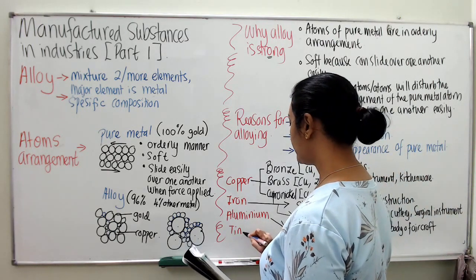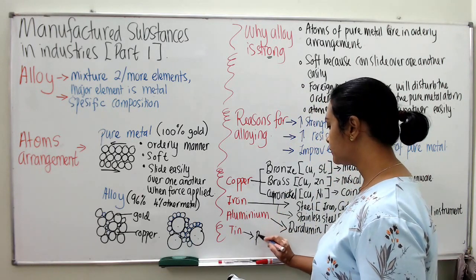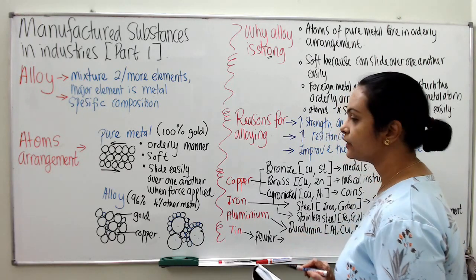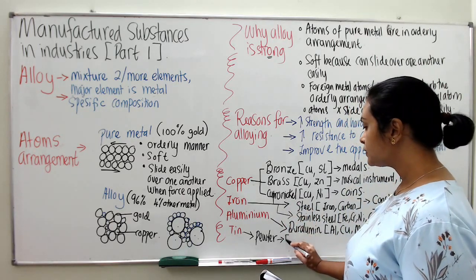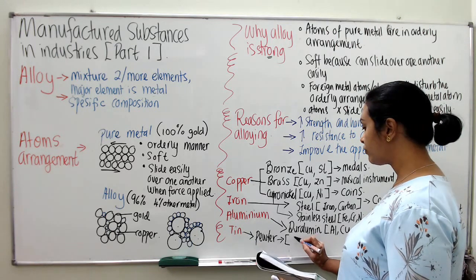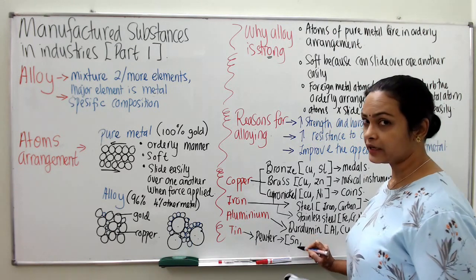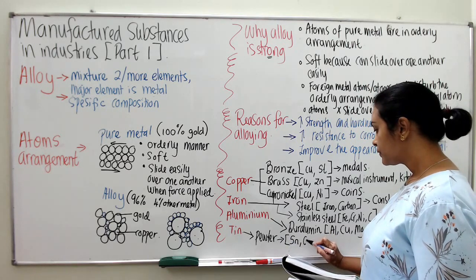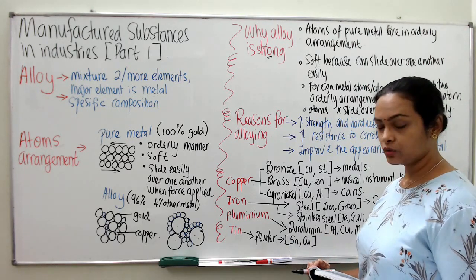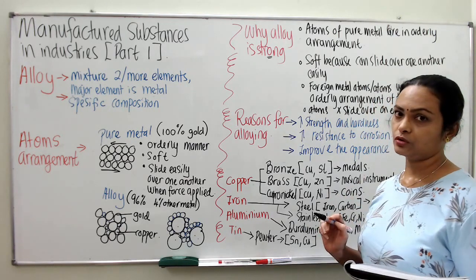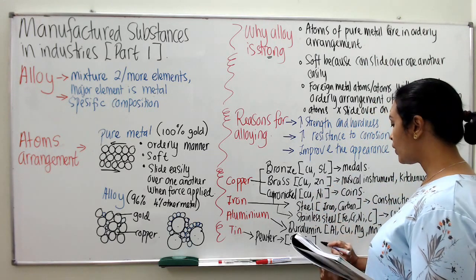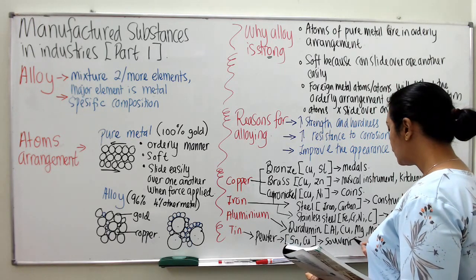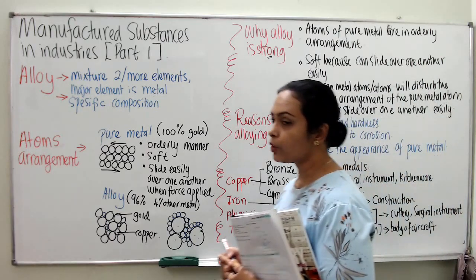Let's go to tin. Tin has one major alloy you should know, which is pewter. Pewter is lustrous, shiny, and looks nice — its appearance is very unique. The components of pewter are 95% tin — in chemistry we use the word 'stannous' not 'tin' — plus antimony and copper as major components. It is shiny and strong, and that is the reason why it is used to make souvenirs.